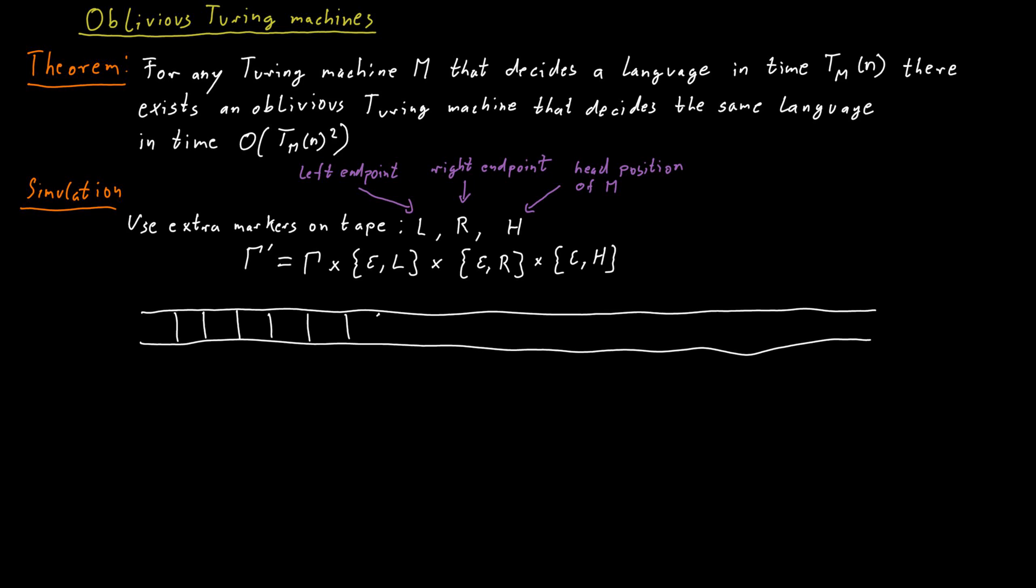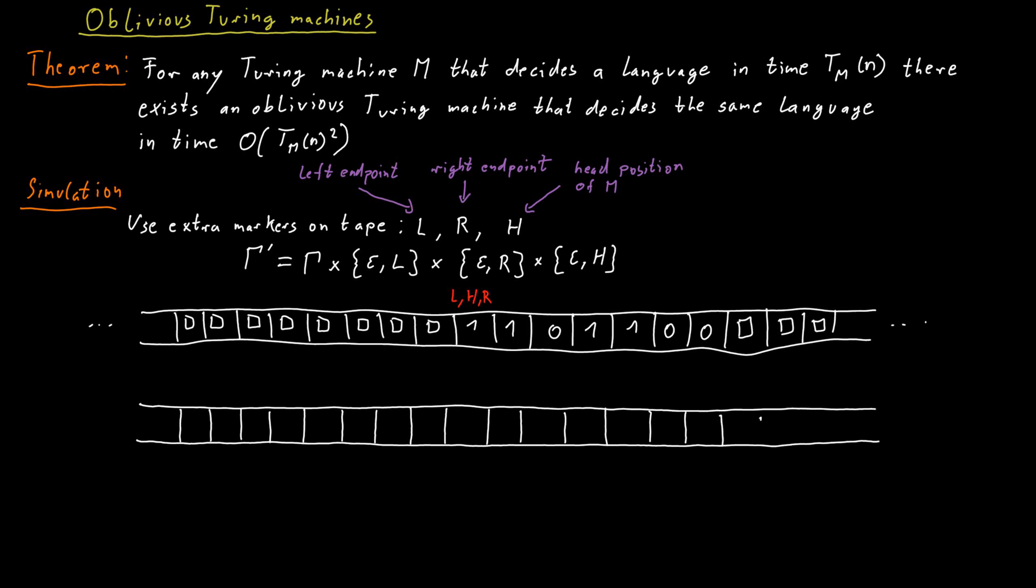When we start our simulation initially, we just place the marker L and R at the starting position of the head. Because we know that the Turing machine M cannot have traveled anywhere so far, and therefore this is the only cell that is interesting right now. And then after that, what we will do is in each step of the simulation, so when the Turing machine M performs a single step, we will move the marker L and the marker R, one cell to the left and one cell to the right, respectively. And so this ensures that the head position of the Turing machine M is always in between those two markers.